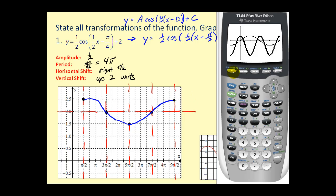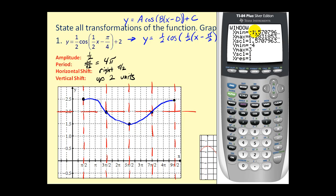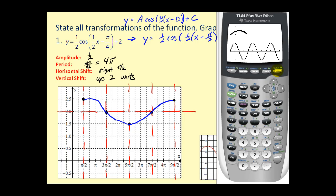Let's check this one on the calculator. We need to change the window — going out to at least nine π over two, let's go to 5π. We'll change y-minimum to negative one, then press graph. There's the basic cosine function, and here's our transformed function. It looks pretty good compared to what we've done by hand.